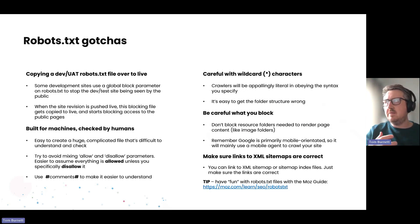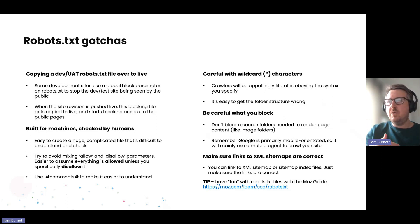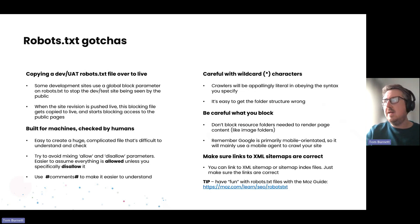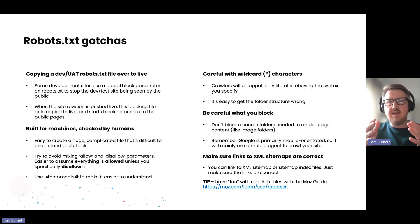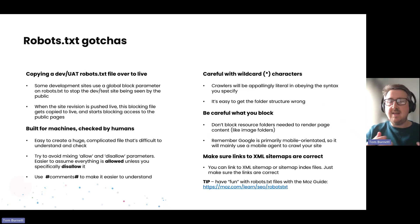A really careful one to consider is around using wildcards. While you might have a wildcard for allowing all user agent types — so not blocking particular search engine bots — be careful when applying that to URLs, because you can inadvertently block entire subfolders and subfolders beneath them if you're not familiar with how those elements work.